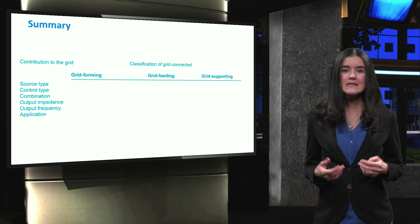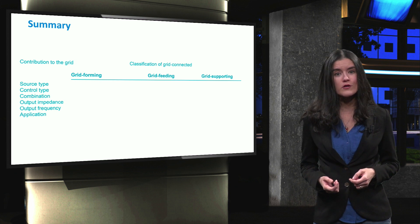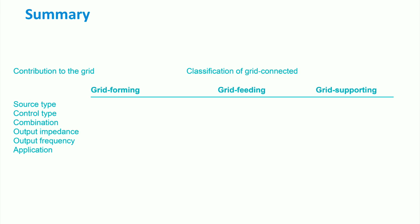So to sum up, let's now take a look again at the characteristics of the three types of converters. The grid-forming type is represented by an ideal voltage source, and its control is based on a constant frequency and voltage strategy. The output frequency is a fixed frequency. This means that the frequency is given by the converter and not imposed by the grid. The main application of this type of converters is islanded mode.